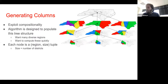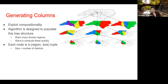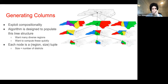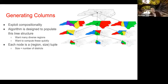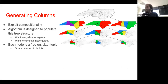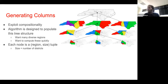Let me pause and check that we're all on the same page. There's a question in the chat window: how would you enforce district contiguity in the column vector? Good — I'll put that on the stack and we will do exactly that along the way.